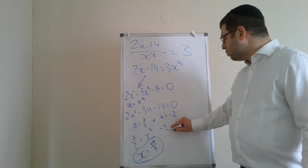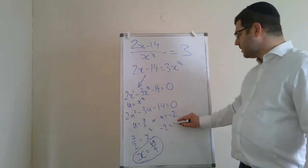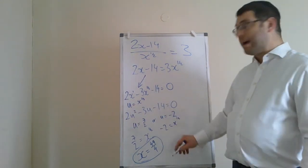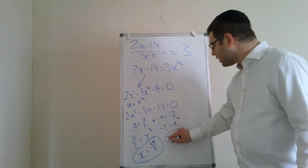Minus 2 would also be put back in. It's x to the half. Square minus 2 and you get 4. So we get two answers.